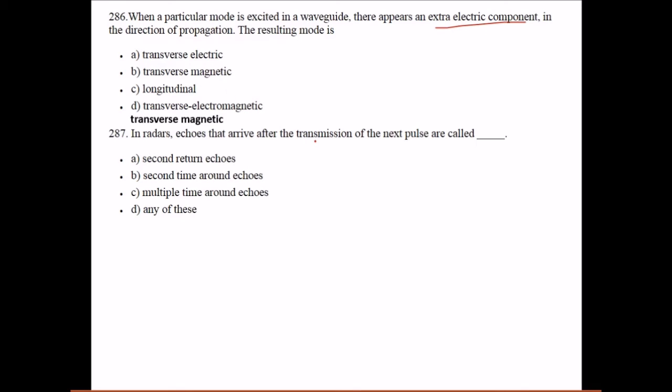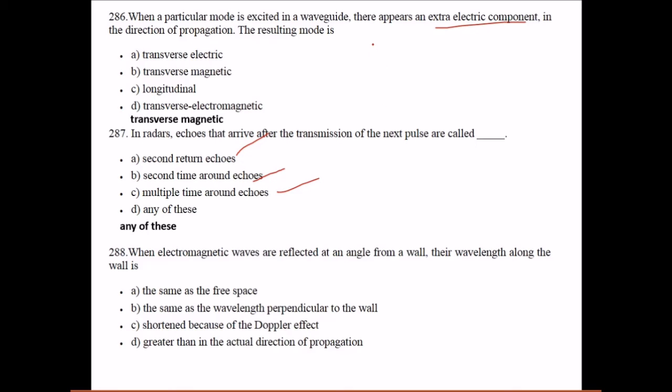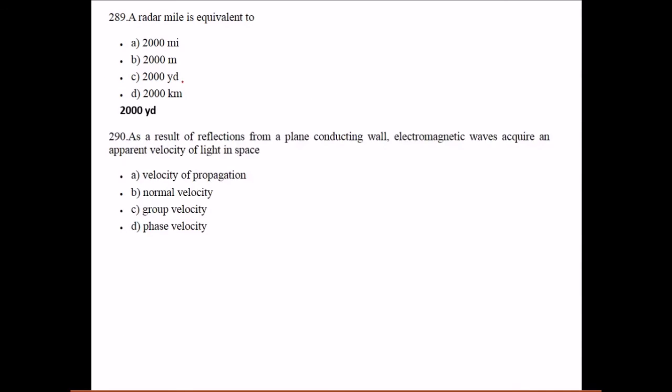In radars, echoes that arrive after the transmission of the next pulse are called second time return echoes. When electromagnetic waves are reflected at an angle from a wall, their wavelength along the wall is greater than the actual direction of propagation. A radar mile is 2000 yards. As a result of reflections from a plane conducting wall, electromagnetic waves acquire an apparent velocity of light in space, which is phase velocity.